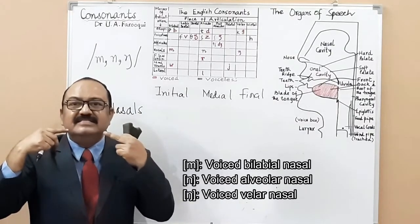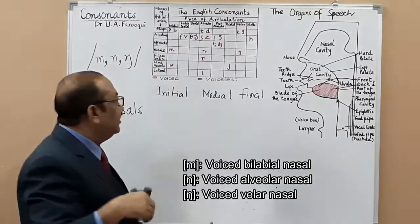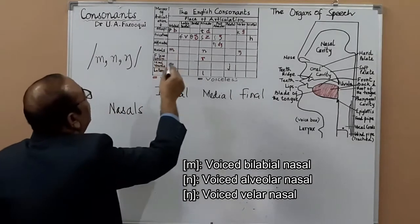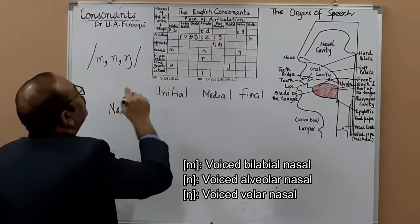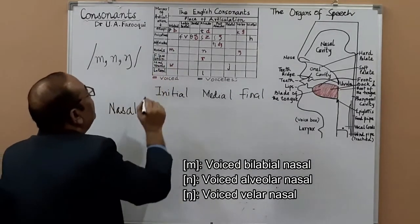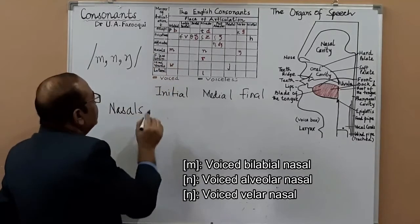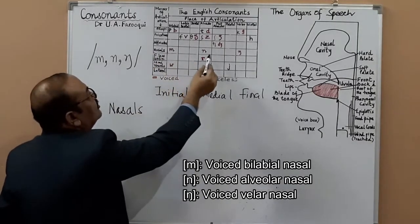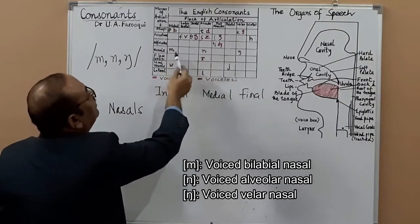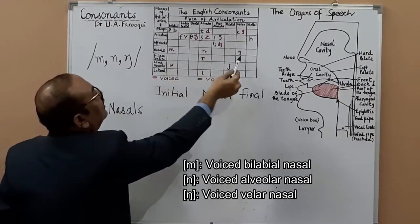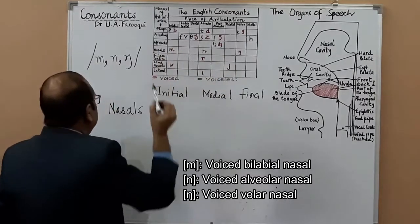Your two lips are the articulators, that's why it's bilabial. /m/ is a voiced bilabial nasal — that's the three-term description. /n/ is a voiced alveolar nasal, and /ŋ/ is a voiced velar nasal.